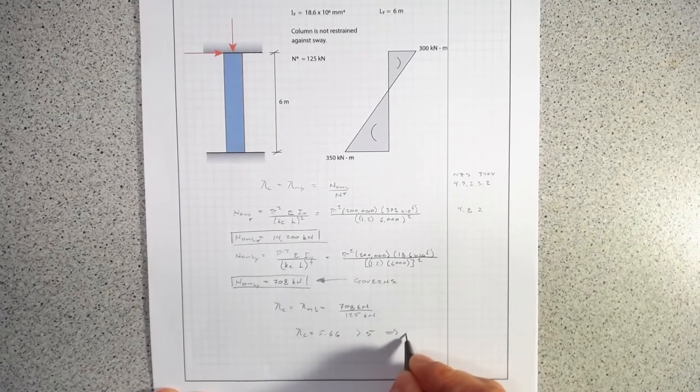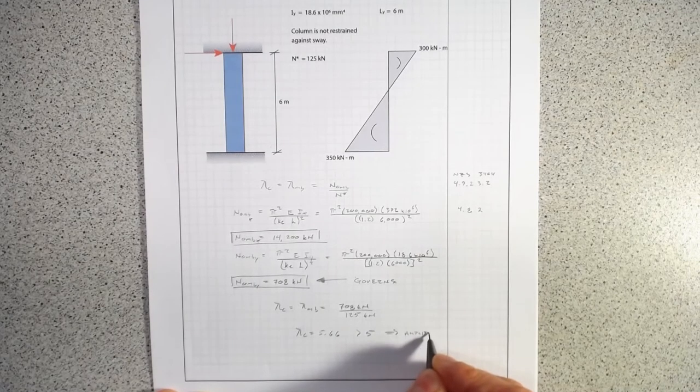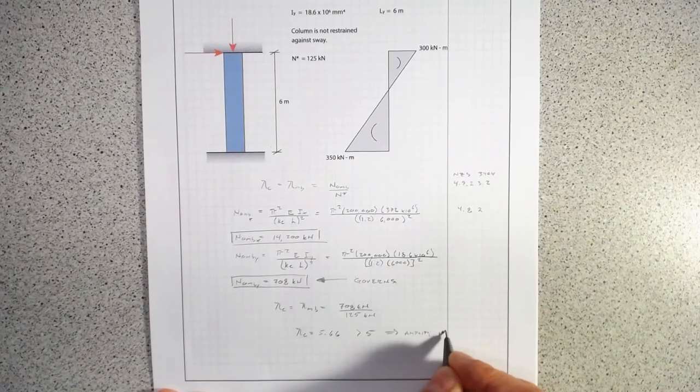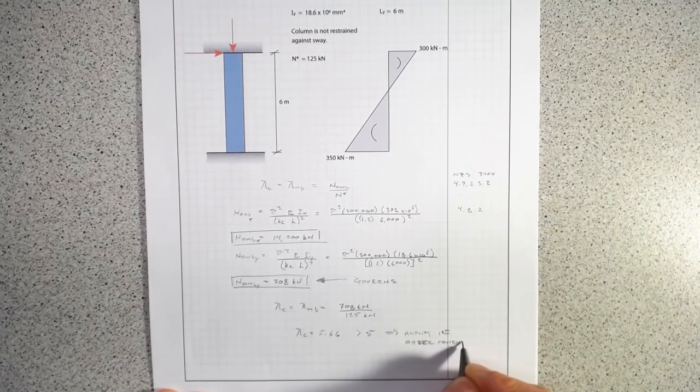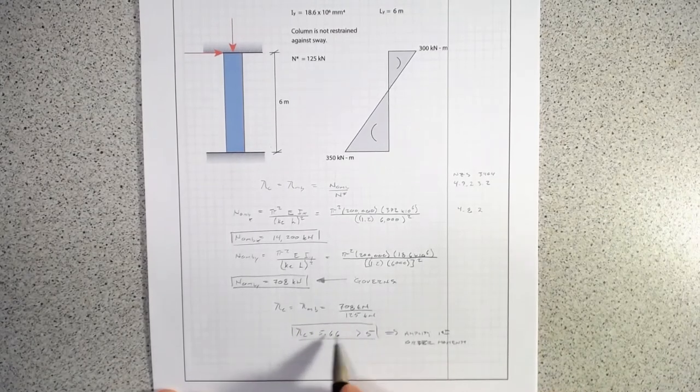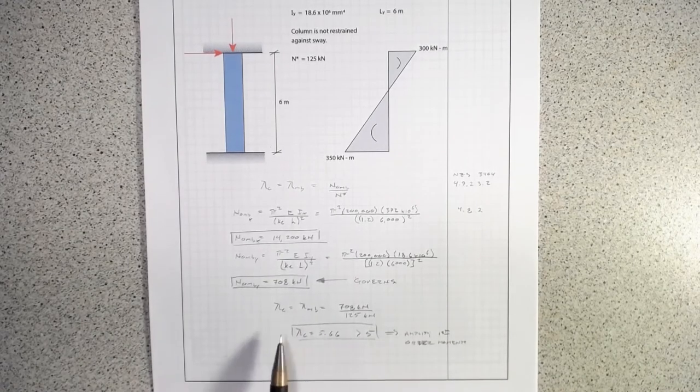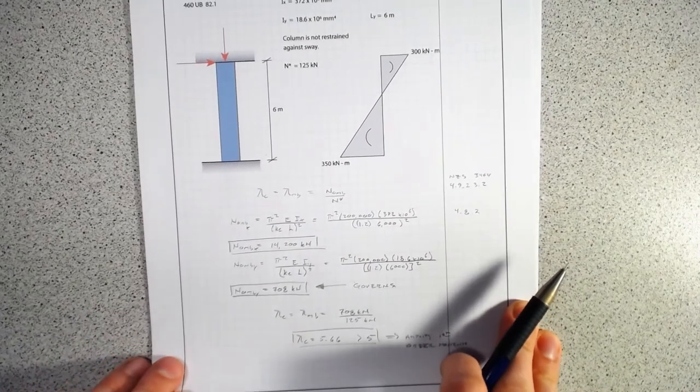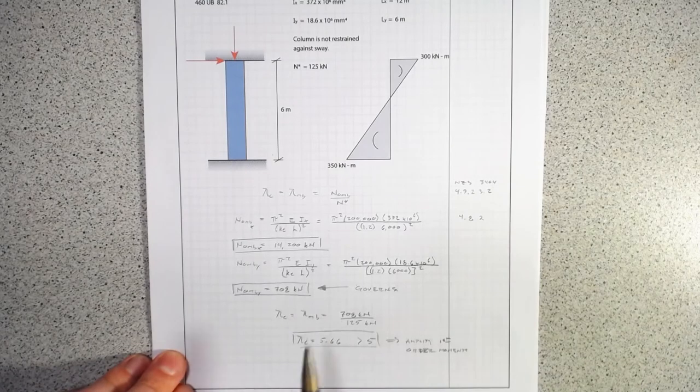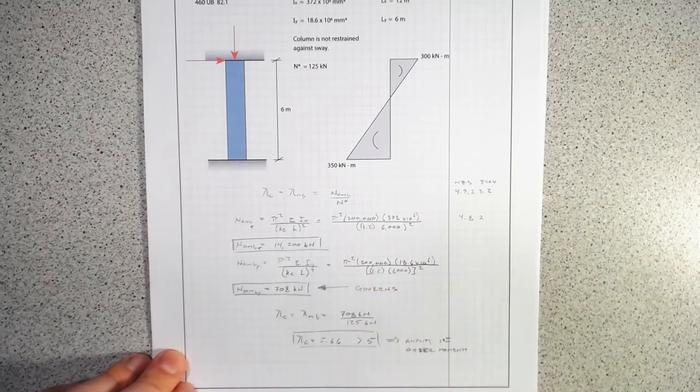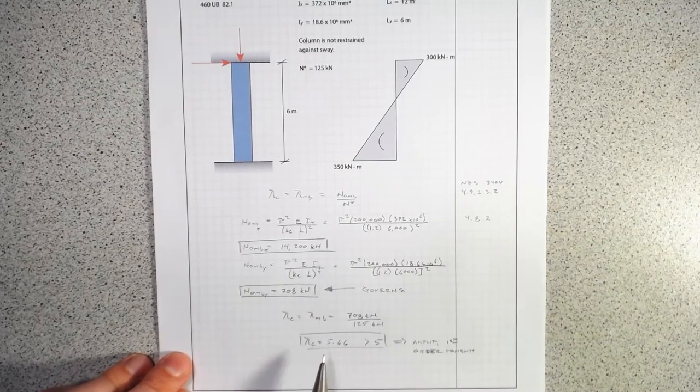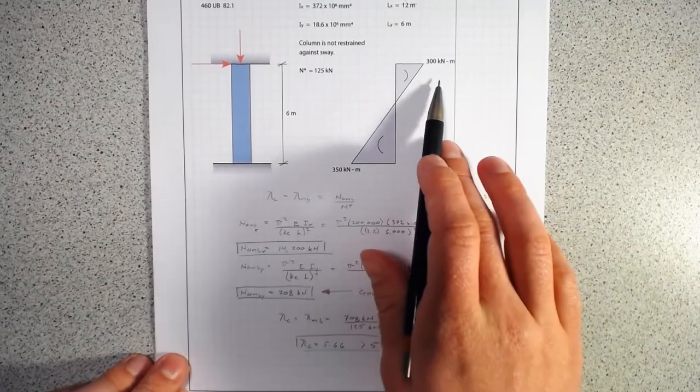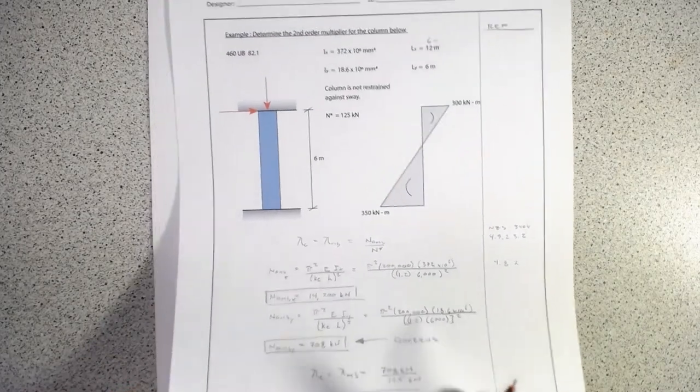That means we can amplify first order moments. If lambda c was less than 5, we'd have to do a specific second order analysis. If lambda c was greater than or equal to 10, our demand would be so much lower than our critical buckling load that we could ignore the second order effects completely. Because we're in that sweet spot between 5 and 10 for a sway system, we'll have to amplify our first order moments, this 350 and 300, by our amplification factor. Because it's a sway system, we need to find both delta b and delta s for sway systems.